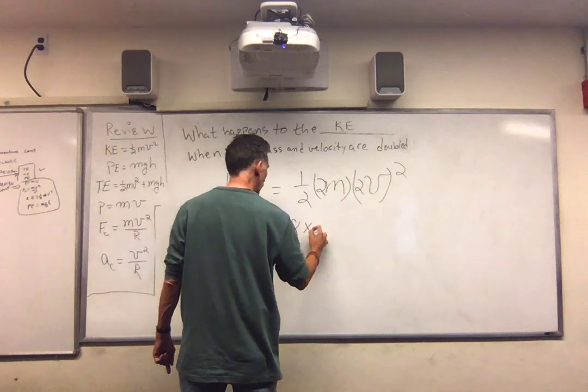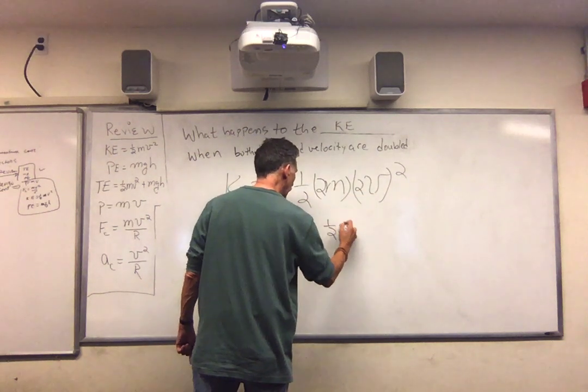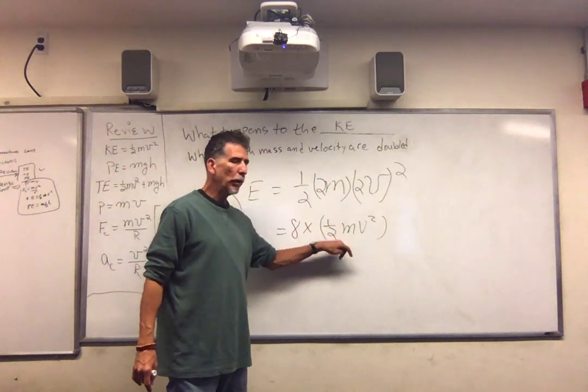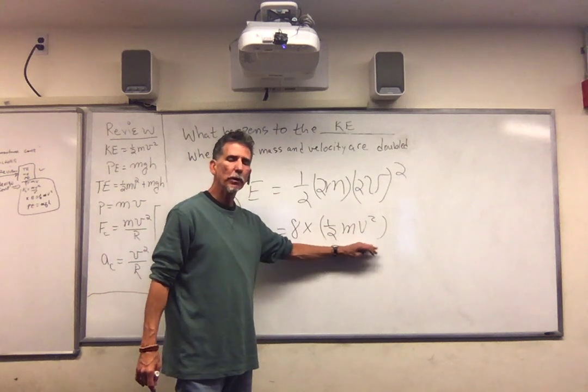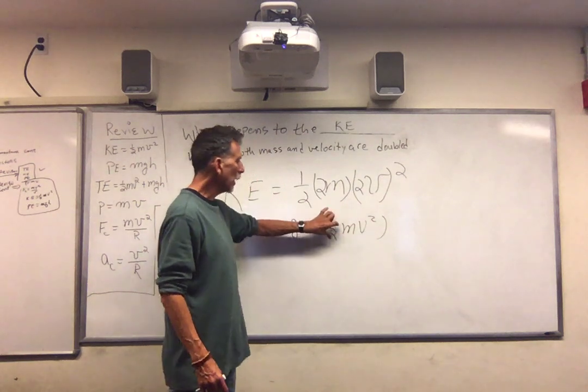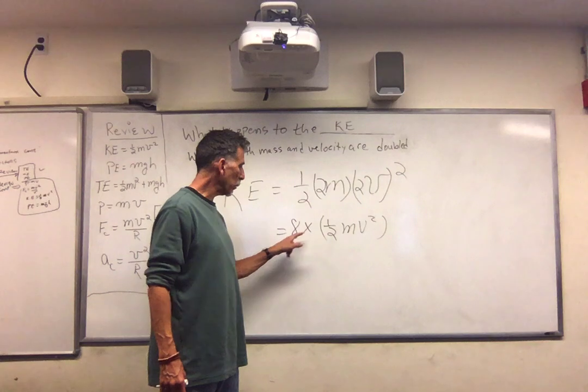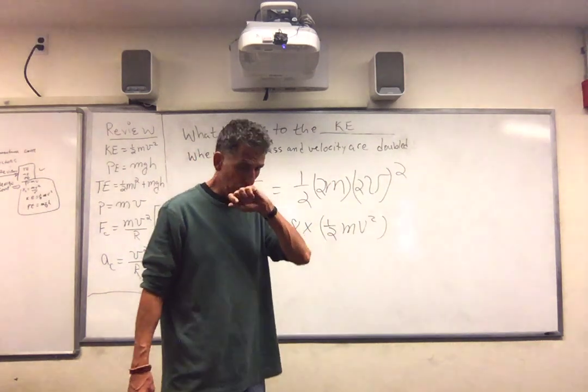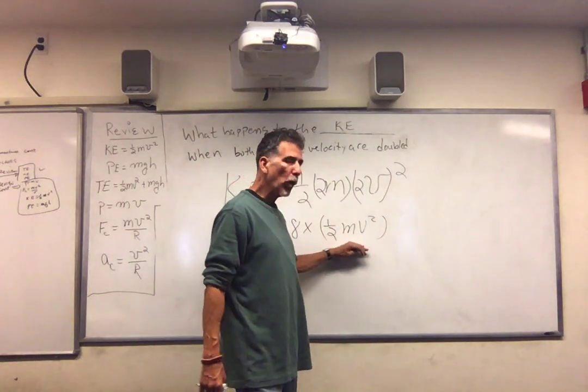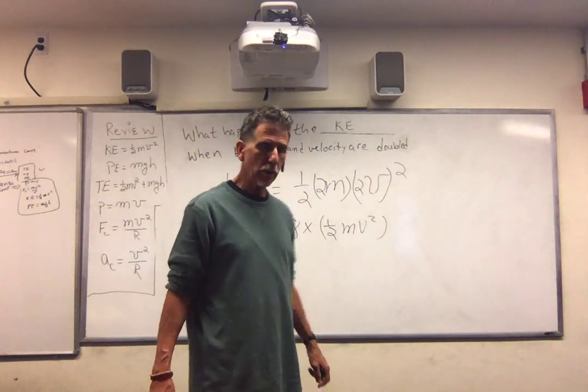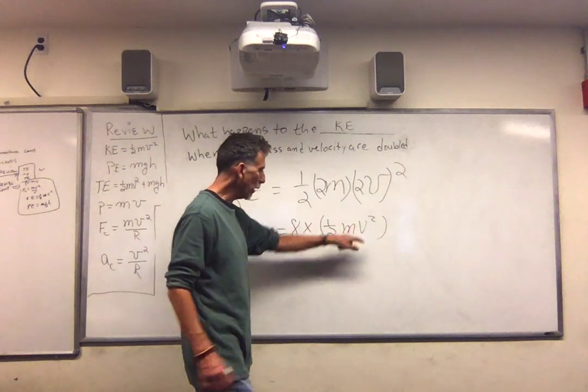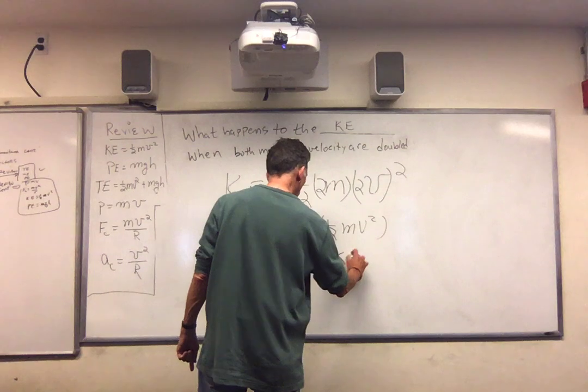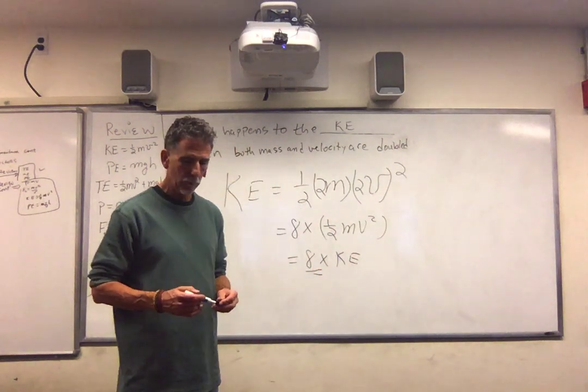Two squared is four times two is eight. So this is eight times one half mv squared. Eight times one half, one half mv squared is the kinetic energy, not mv squared. If you multiply one half times eight, you'll get four mv squared. Four mv squared is not four times the kinetic energy. Kinetic energy is one half mv squared. So the answer is eight times the kinetic energy. So it's increased eight times.